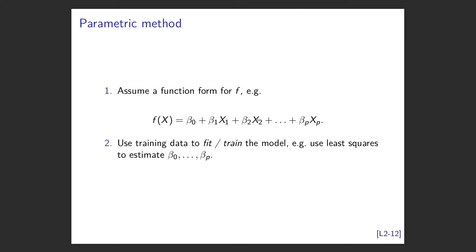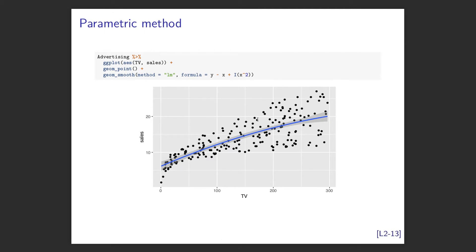Here's a parametric example: TV on the x-axis, sales on the y-axis. I took the advertising data, did a ggplot, added my points, then fitted using geom_smooth with a formula specifying a quadratic model. You can see the quadratic there and it fits reasonably well. That's an example of a parametric method.